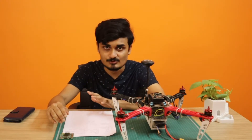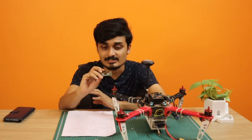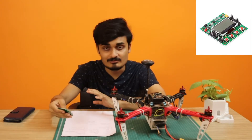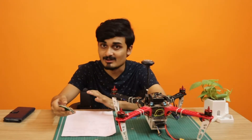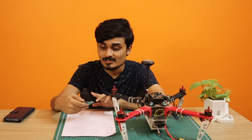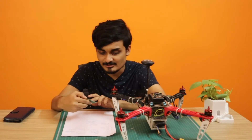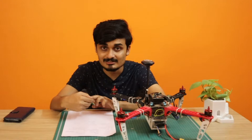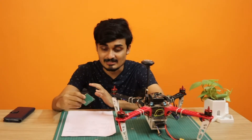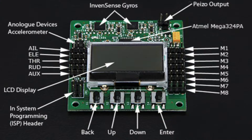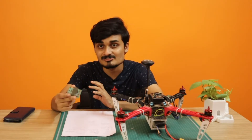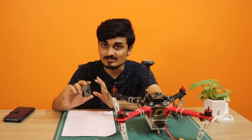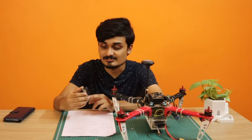Let's start with KK2. KK2 is a very old flight controller — I have one here and I built my first drone with it. It has an 8-bit ATmega processor, so it's not that fast. It has an MPU-6050 with three gyroscope and three accelerometer sensors. One thing it has that no other controller in our list has is a built-in display with four buttons, so you can configure it without a PC.